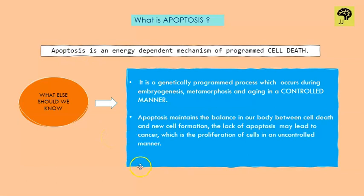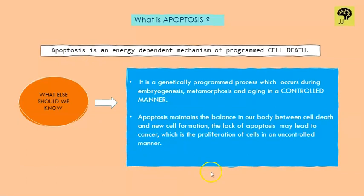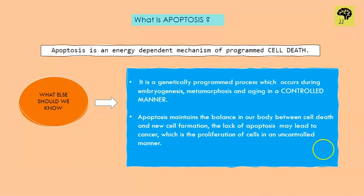Some of you might ask: why cell death? Consider cancer — cancer is the proliferation of cells in an uncontrolled manner, where cells keep dividing and dividing. There should be something that stops and kills those cells, and that is the role of apoptosis. Apoptosis also maintains the balance in our body between cell death and new cell formation. For example, if liver cells keep dividing, the liver will become huge and displace other organs, so cell number must be maintained.